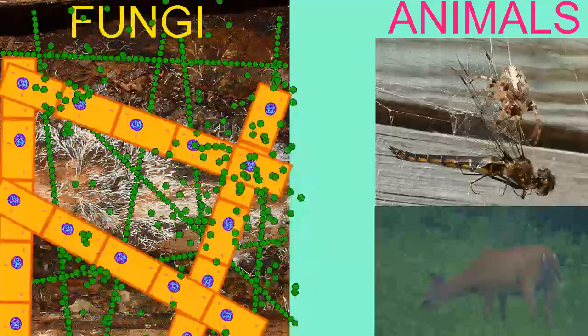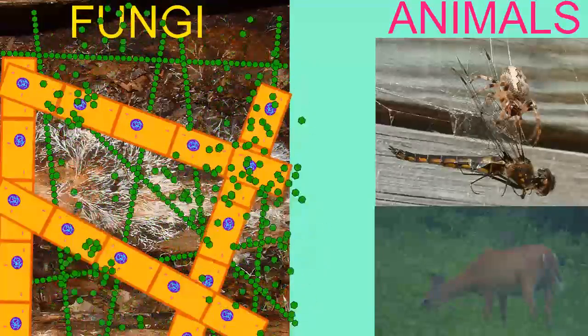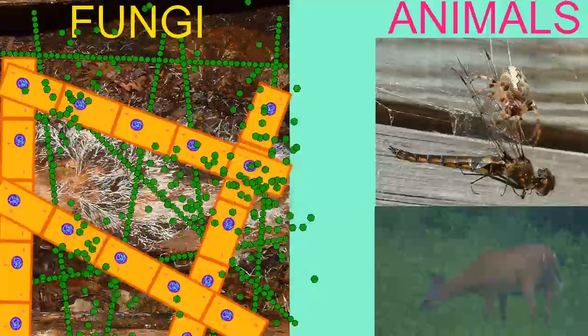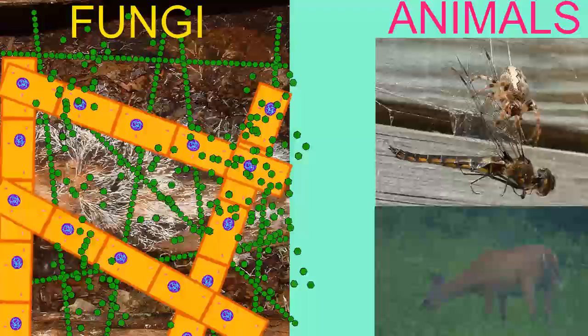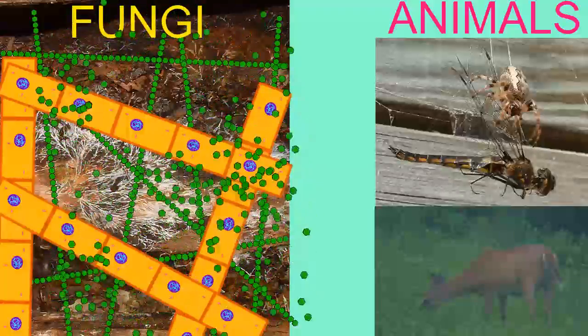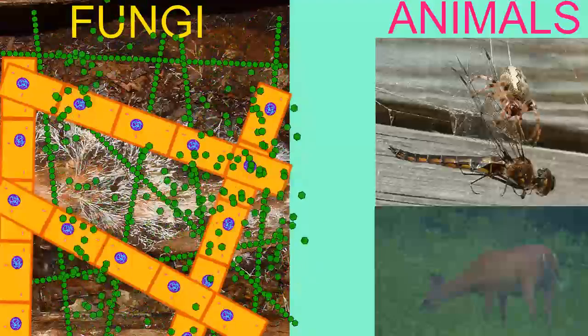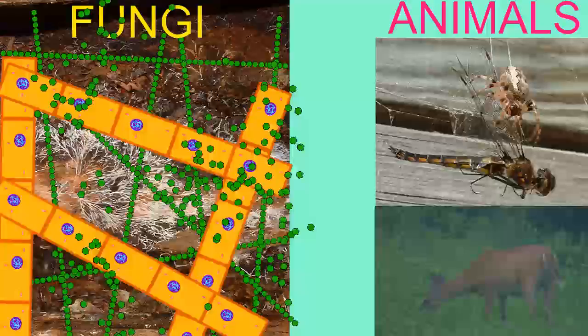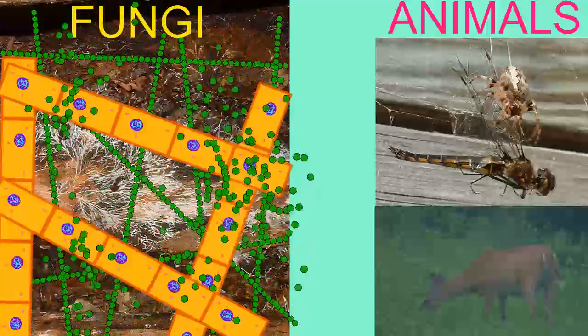Fungi and animals are more closely related to each other than either group is to plants. Both are chemoheterotrophic. They get both their energy and their organic molecules of carbon from other organisms instead of making their own through photosynthesis as plants do.